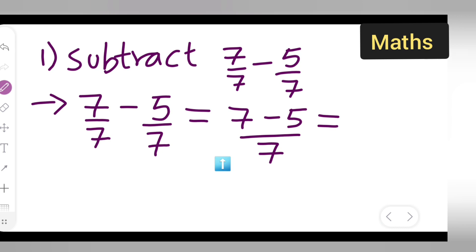So 7 minus 5 will give you what? 7 minus 5, subtract it. So we will get 2. Write 2 upon 7.